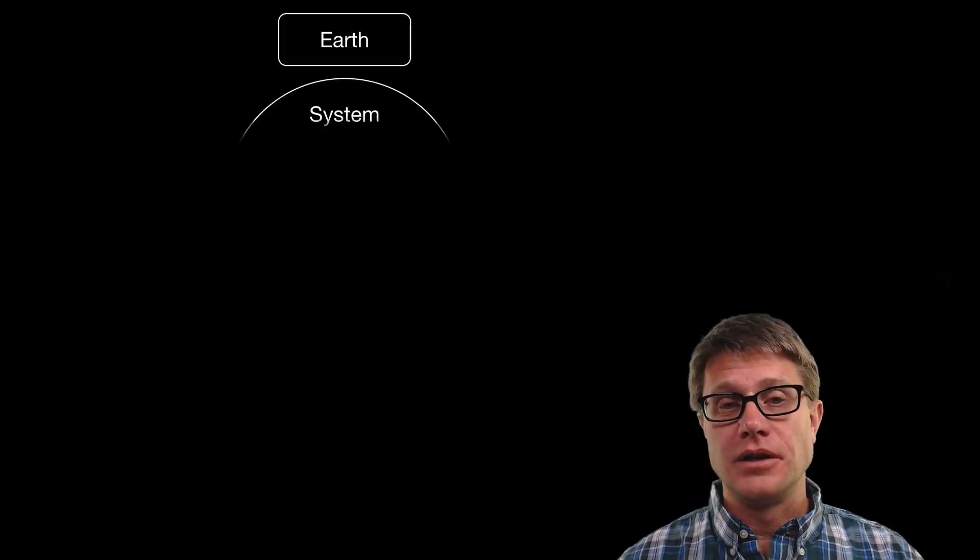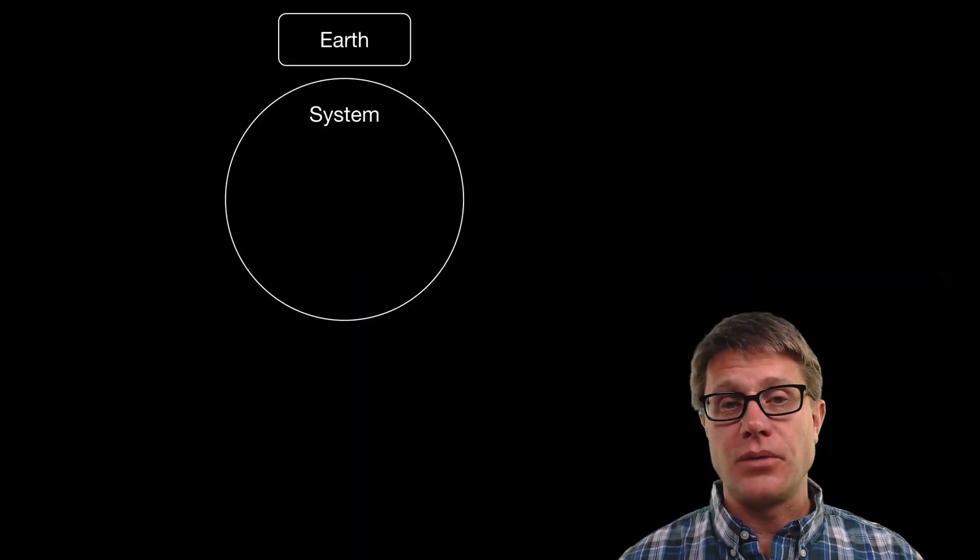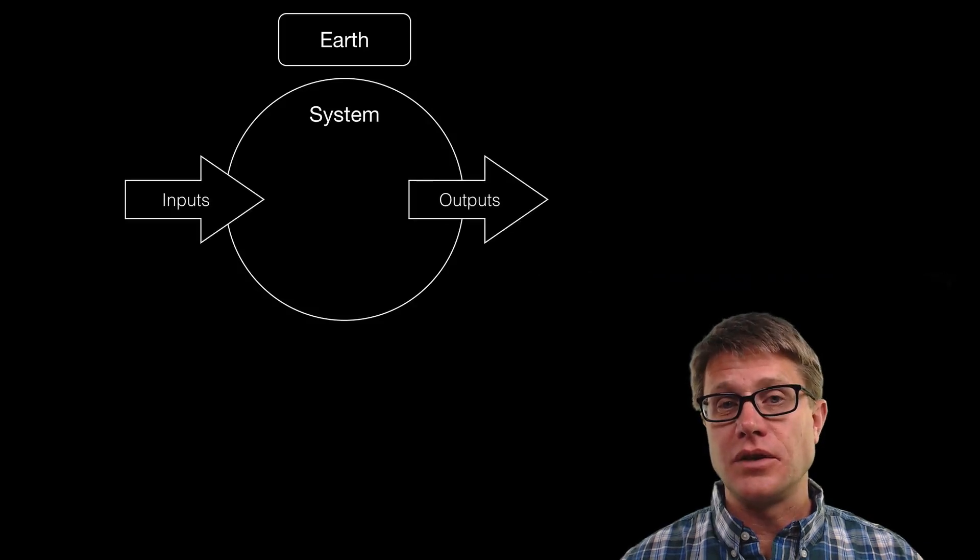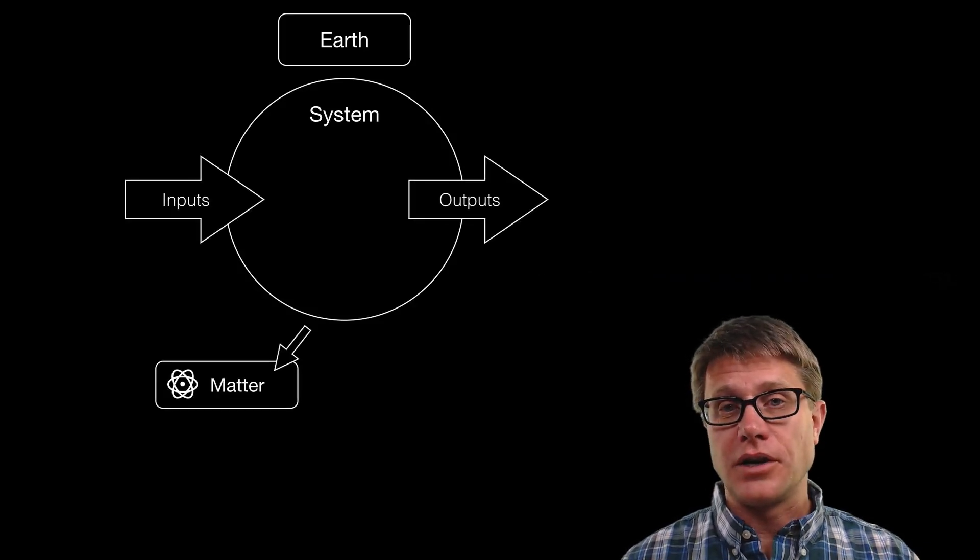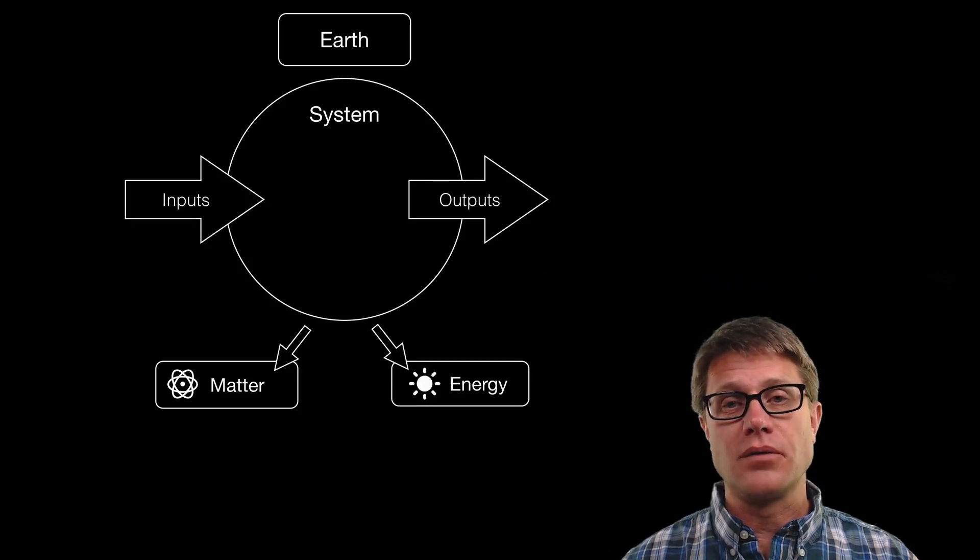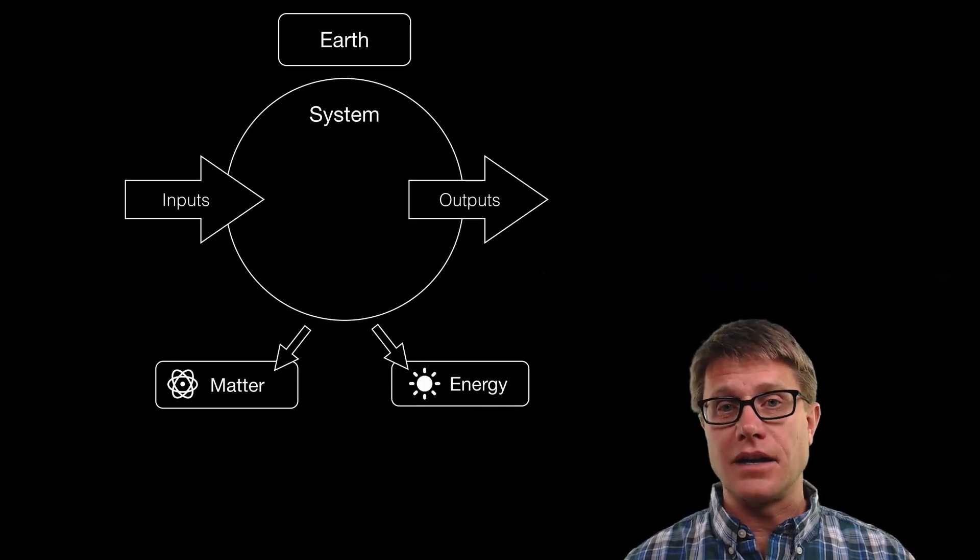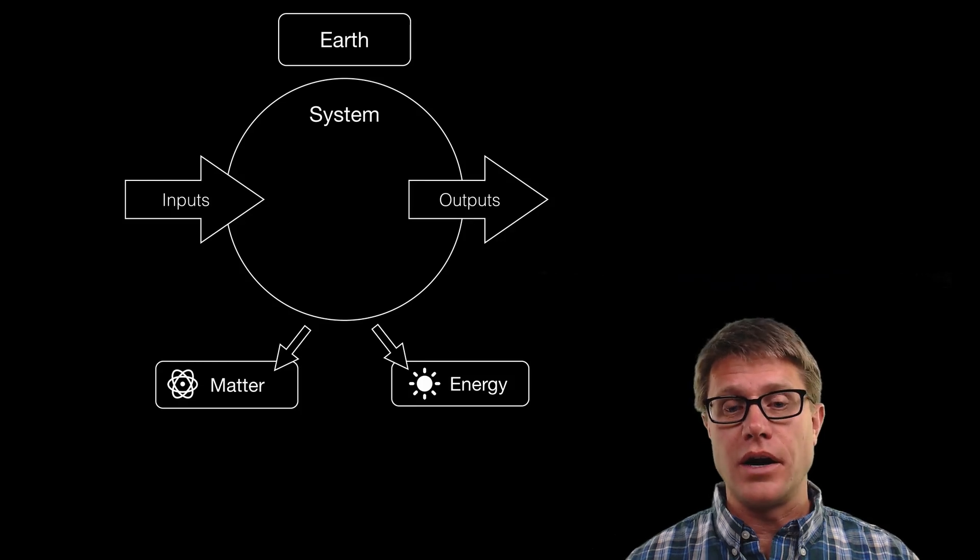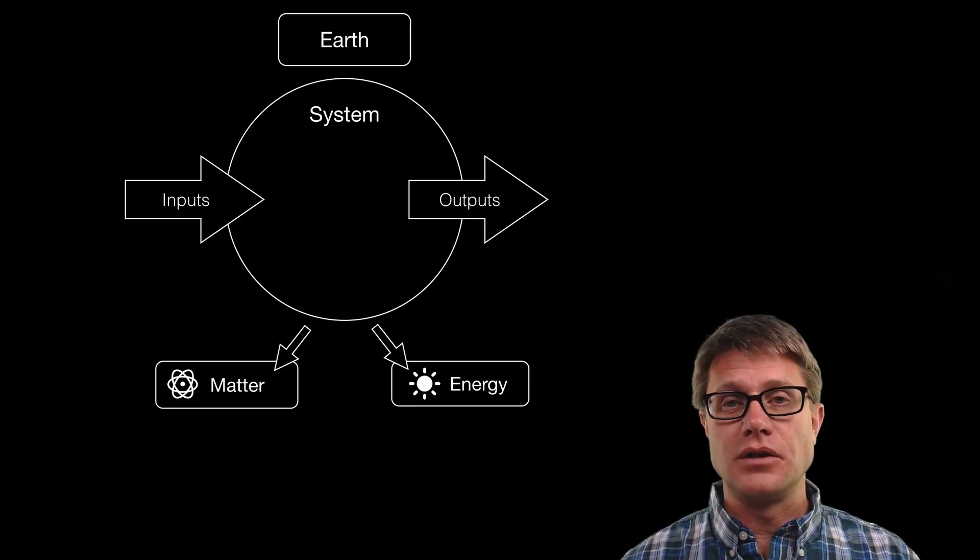The earth at the largest level is a system. It is separated from its surroundings. Understanding the inputs and the outputs allows us to manage a system. The big things we are looking at are the matter and the energy. Matter is what we are made of, the atoms that make us and the rock and the water. Energy is the ability to do work.